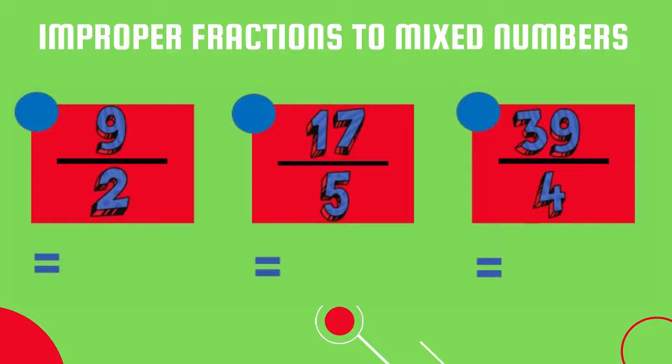Let's start with the first one: 9 over 2. We ask ourselves how many twos into nine there are. There are four twos in nine, and four times two is equal to eight. Therefore we have a remainder of one that becomes our numerator, and our denominator stays unchanged as two. 9 over 2, the improper fraction, is equal to 4 and a half as a mixed number.